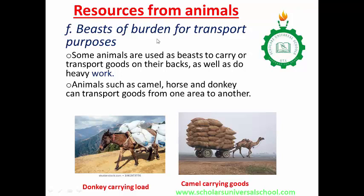Animals can also be used as beasts of burden for transport purposes. The donkey and the camel are mostly used to carry goods from one place to another, so they help in transportation. Animals such as camel, horse, and donkey can transport goods from one area to another. Back in the old days, they were used to transport goods from one place to another. In places where there are no vehicles, camels or horses are used to transport goods.